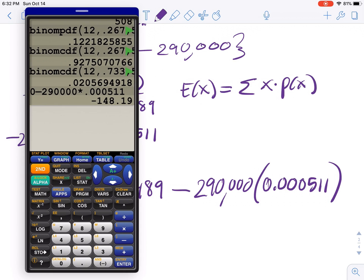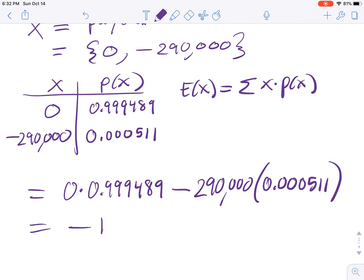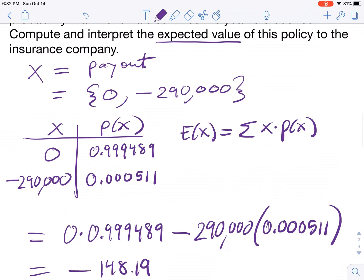So our expected payout is negative $148.19. Now notice that's the payout that the company... It says the expected value of this policy to the insurance company. So they're expected to pay out $148.19.